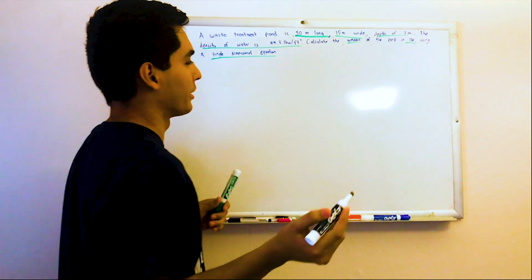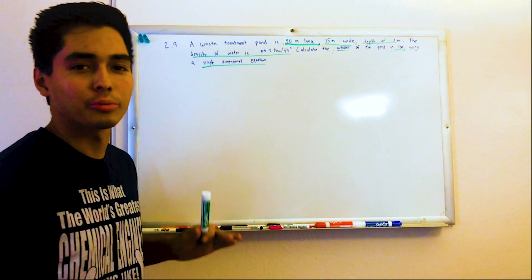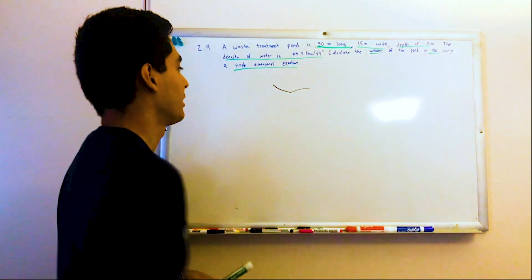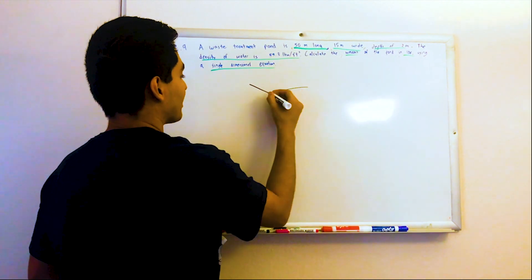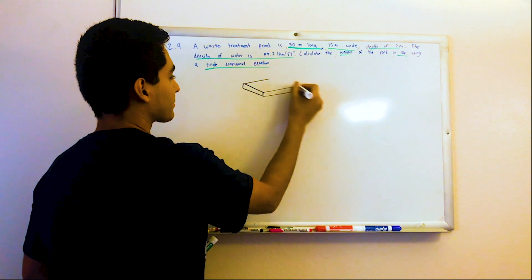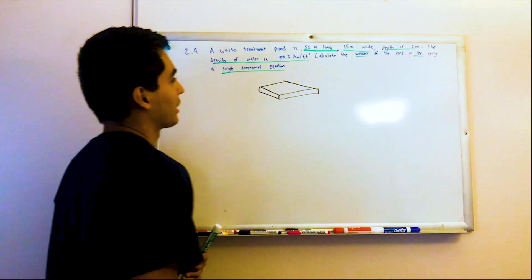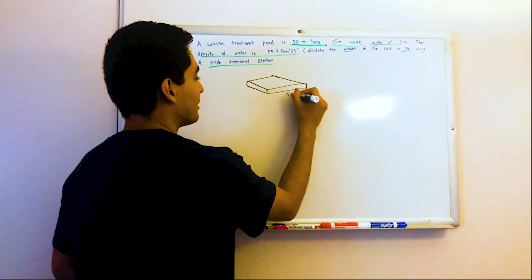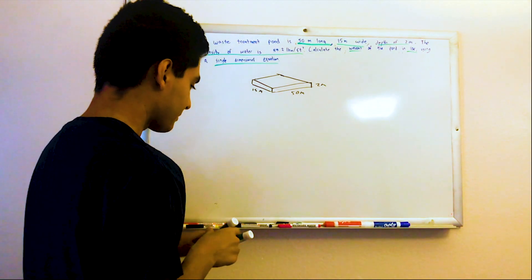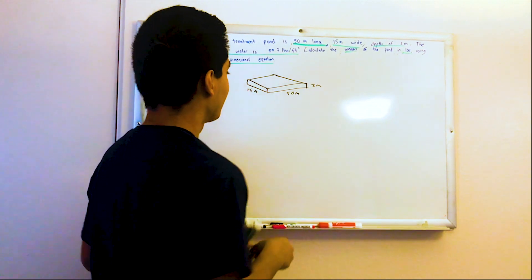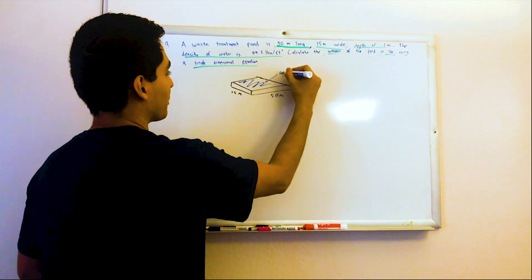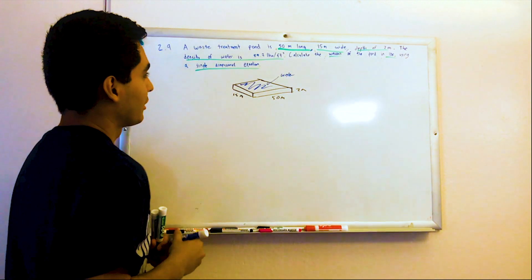So first let's draw a pond, and since it gave us these nice rectangular dimensions, let's just—even though if you ask me ponds are quite round—but I'm just going to assume it's like a rectangle. So this is our pond. Oh god, it's horrible. I should never be an artist. 50 meters long, 15 meters wide, depth of 2 meters.